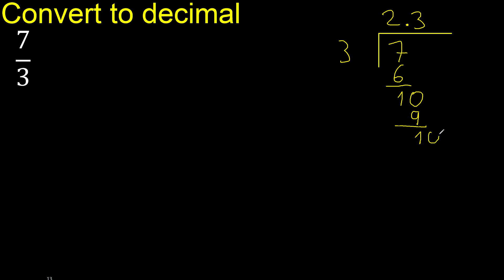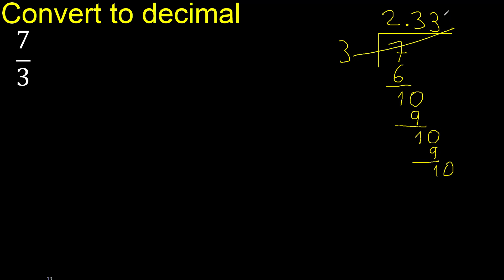Always complete with 0. Point is here: 0 point. Ok, 10. 3 multiplied by 3 is 9. Subtract. Complete. 3 multiplied by 3 is 9. Subtract.